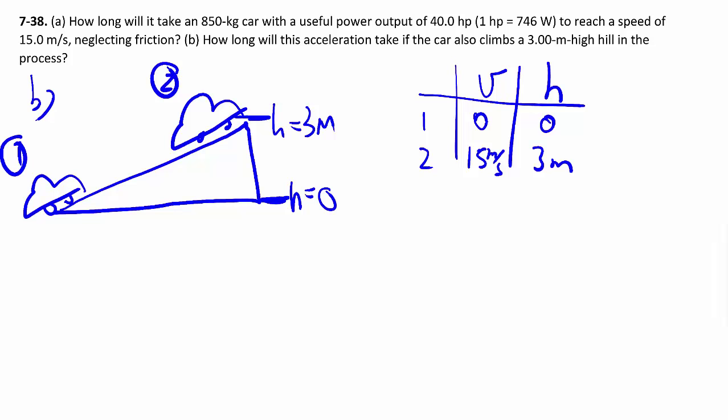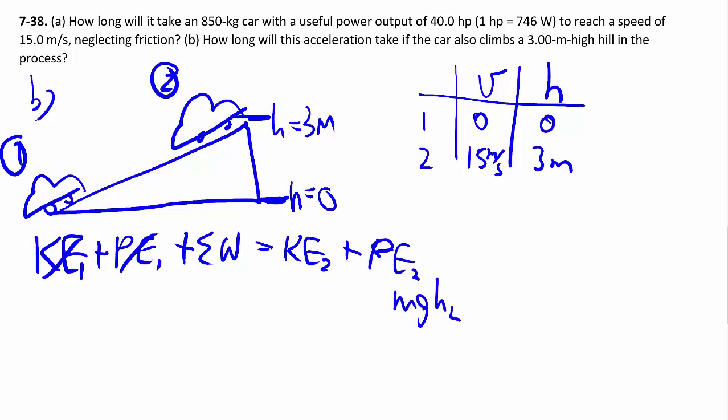And again, we'll relate the energy of before and after using my equation that keeps track of everything. These two are zero again. PE2 is not zero this time, it's Mgh2. And then there's also one half MV2 squared.